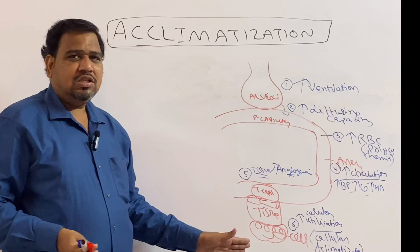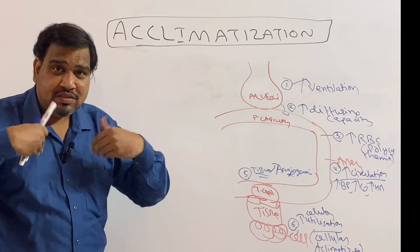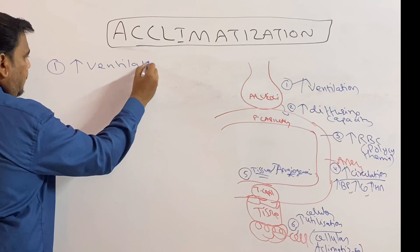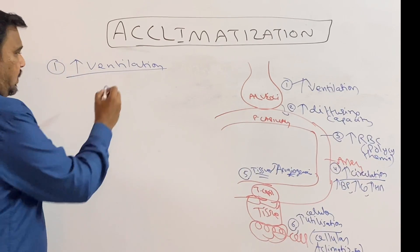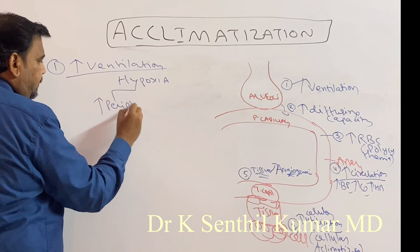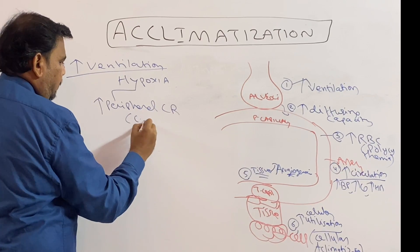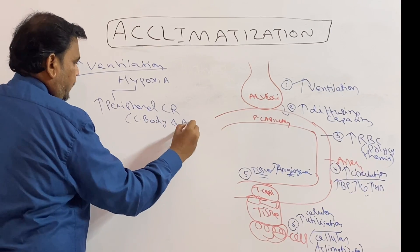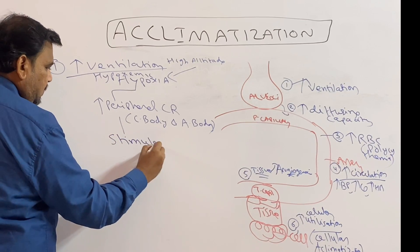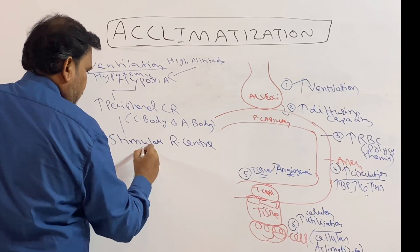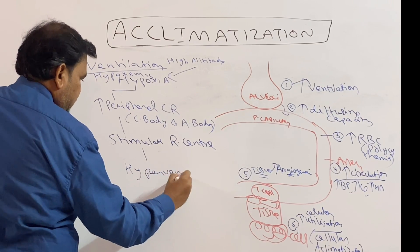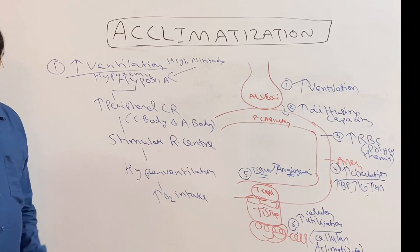Now I am going to explain all six points with their mechanisms. The first one is increased ventilation. In high altitude hypoxia, what happens is — hypoxia stimulates peripheral chemoreceptors, which are the carotid body and aortic body. What the peripheral chemoreceptors do is stimulate the respiratory center, so there will be hyperventilation for increased oxygen intake.